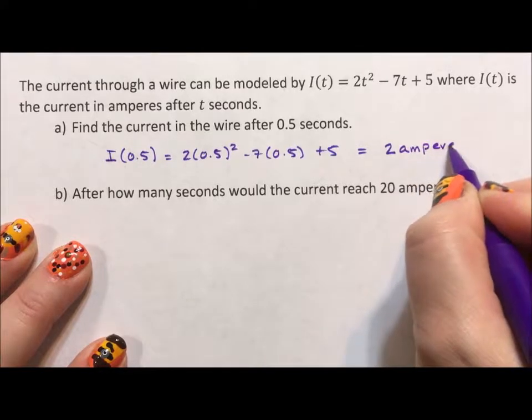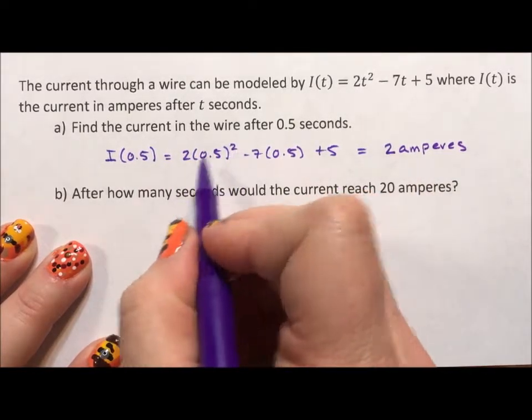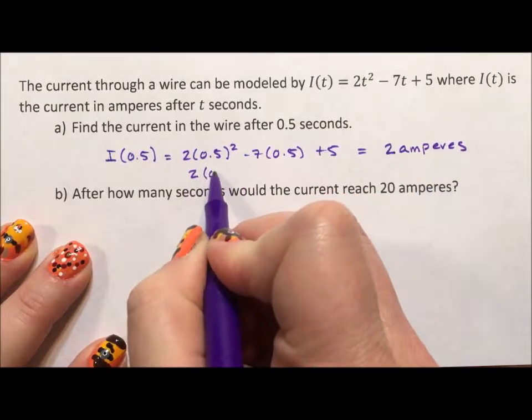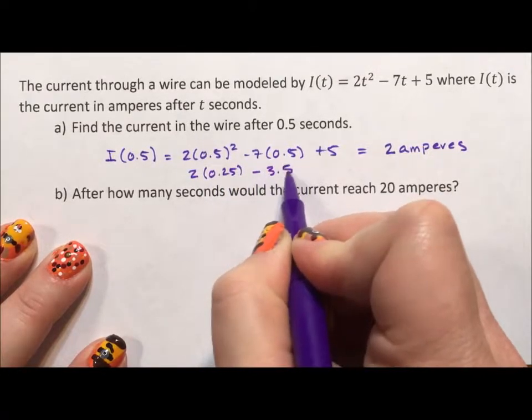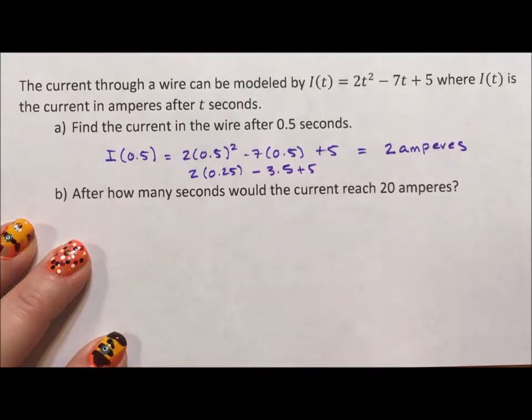In all honesty, we probably could have calculated this out. 2 times 1.25 minus 3.5 plus 5, but it's all good.